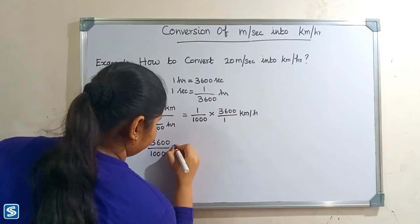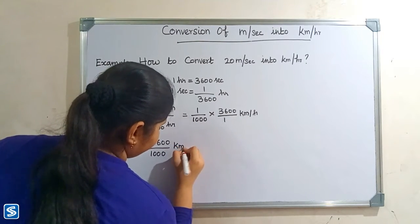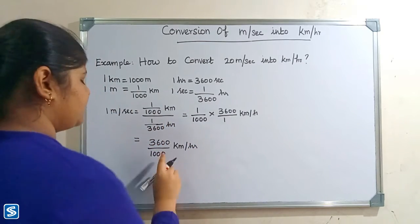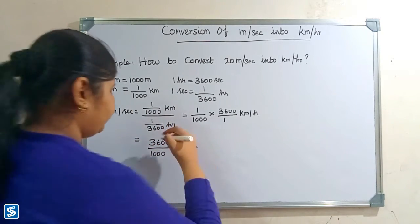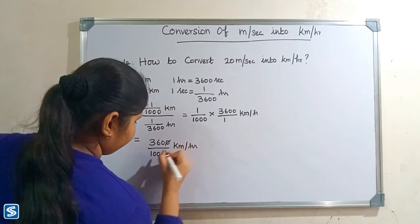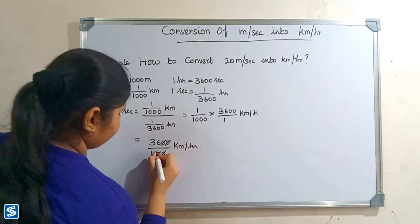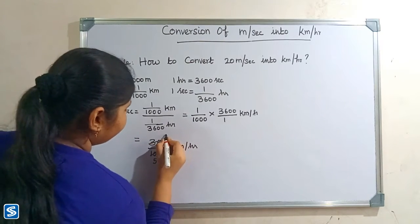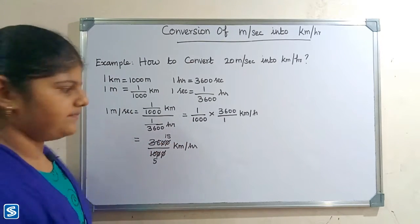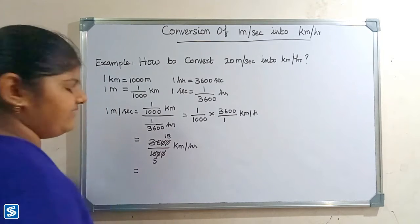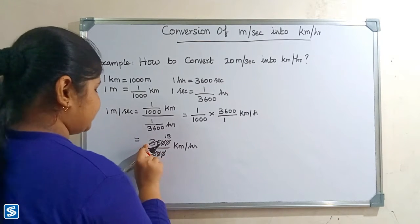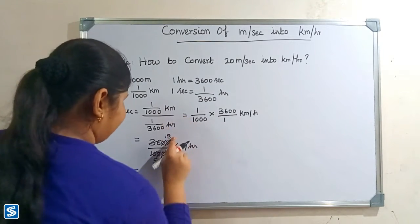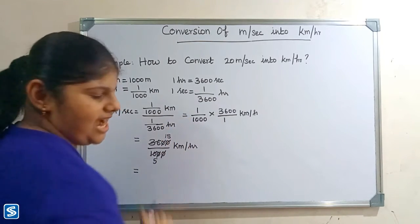Here the zeros get cancelled — 0 and 0 gets cancelled, 0 and 0 gets cancelled. 2 fives are 10, 2 eighteens are 36. So when we divide 3600 by 1000 kilometer per hour, our answer will be 18 by 5 kilometer per hour.